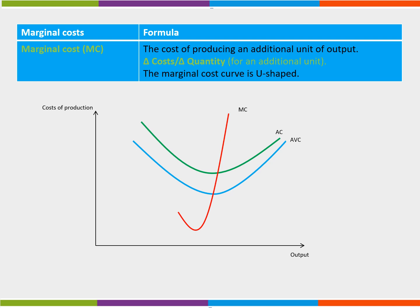This means that producing an additional unit, the marginal unit, costs less than the cost of producing the previous unit. After we have reached the lowest point on the marginal cost curve, any additional unit will cost more than the previous unit.